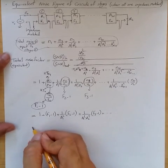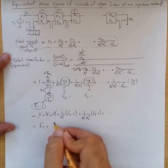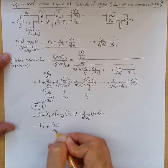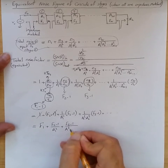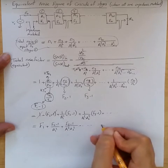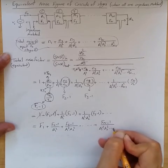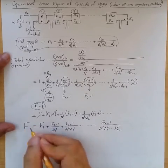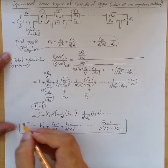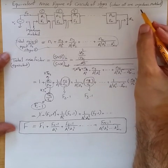So finally, of course, it's f1 plus f2 minus 1 over a1 squared, plus f3 minus 1 over a1 squared a2 squared, and fn minus 1 over a1 squared, a2 squared, an minus 1 squared. And that is the overall or equivalent total noise factor of cascade when all are impedance matched.